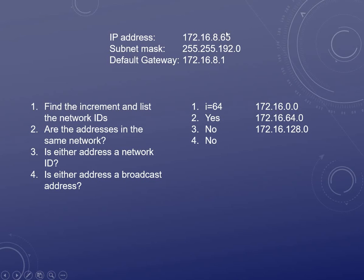These are the hosts, and the network range is 0 to 64. All of these addresses are valid hosts inside that range — they are nowhere near the broadcast address or the network ID. So that is an easy and valid configuration with plenty of room inside of there.